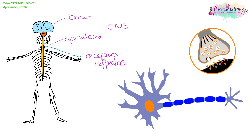Sometimes the signal just stops at your spinal cord and then comes straight back again — that is going to be a reflex. This is going to happen when you touch something hot and you move your hand away without even thinking about it. Other times something is going to happen where the signal will go up to your brain, you'll think about it, and then you'll decide to move.